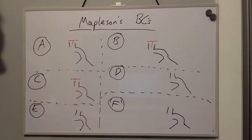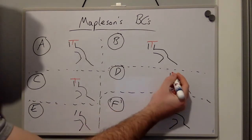And then on Mapleson circuits D, E and F the fresh gas flow comes in at this point in the circuit.